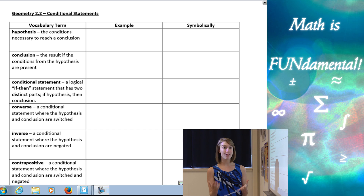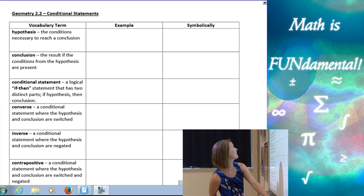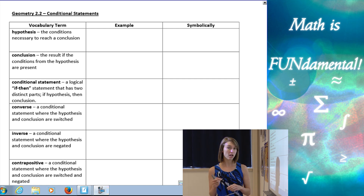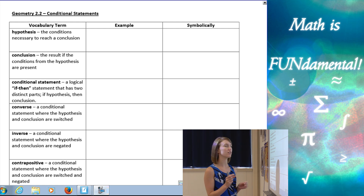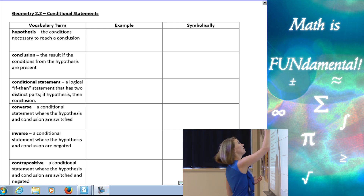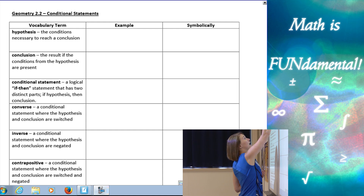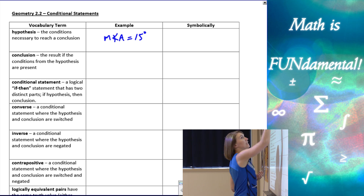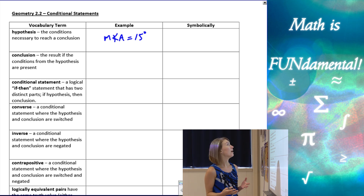First vocab term: we have a hypothesis. A hypothesis is the conditions that are necessary in order to reach the conclusion. It's not going to be a full statement — it's only going to be part of the statement, just the conditions that we have to meet. For example, the measure of angle A has to equal 15 degrees — that might be the conditions I need to meet.